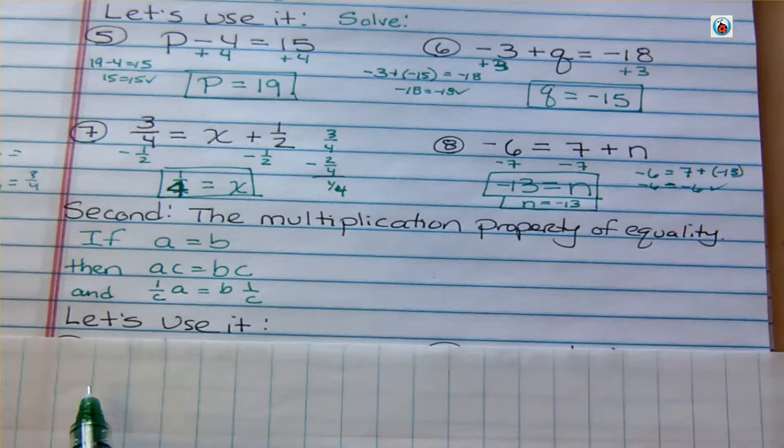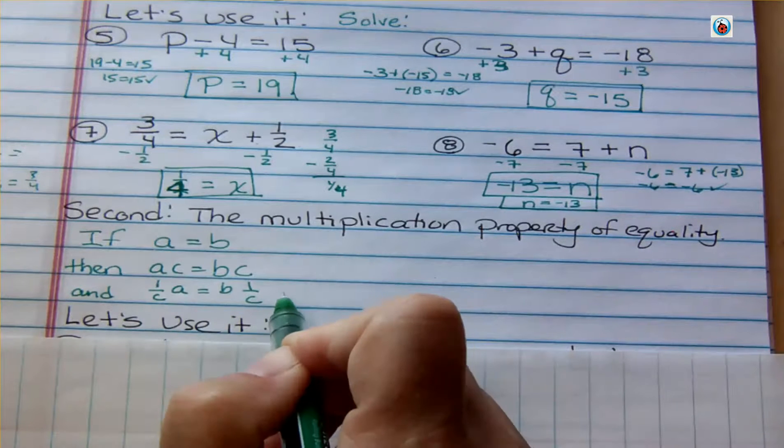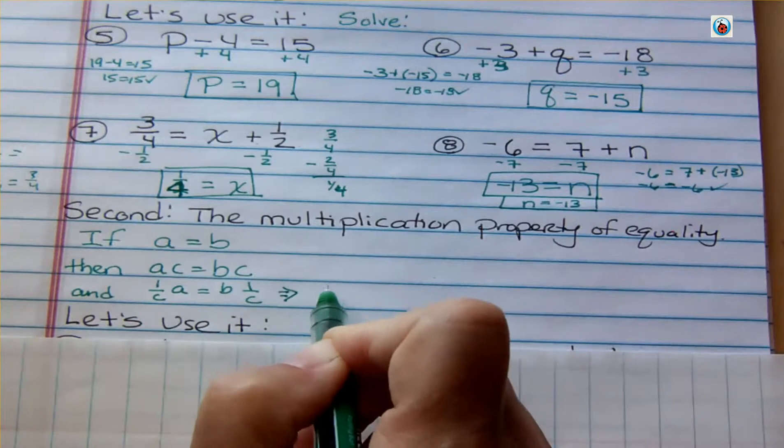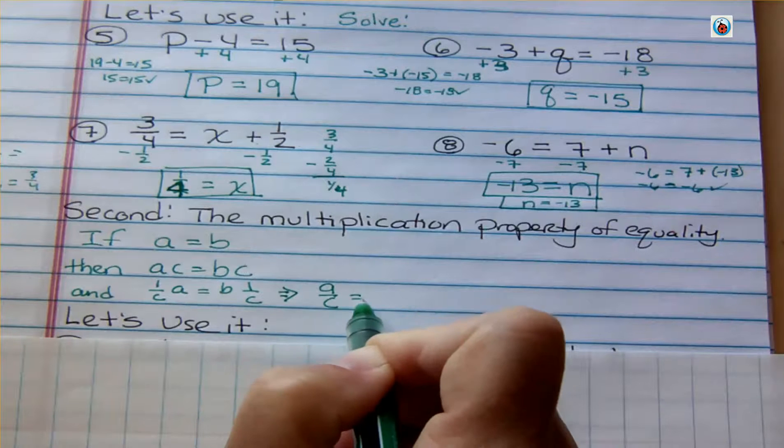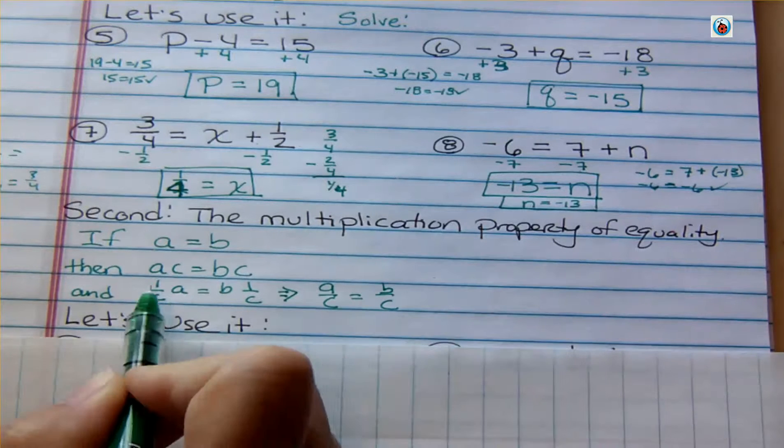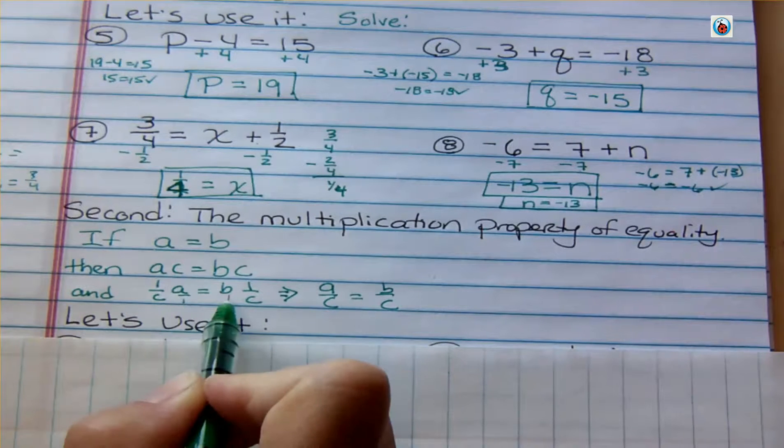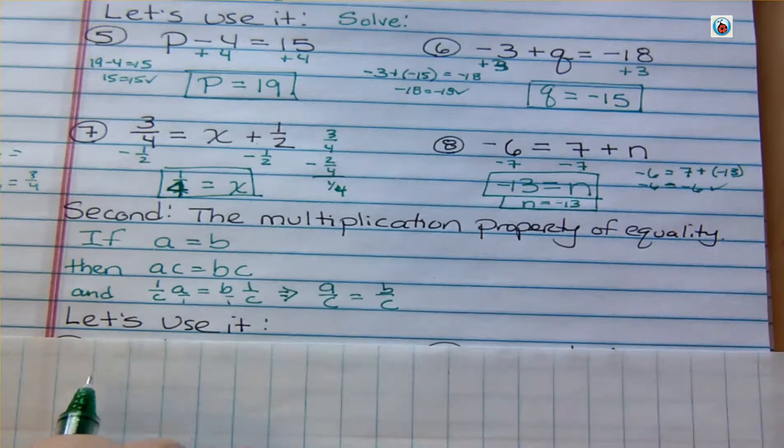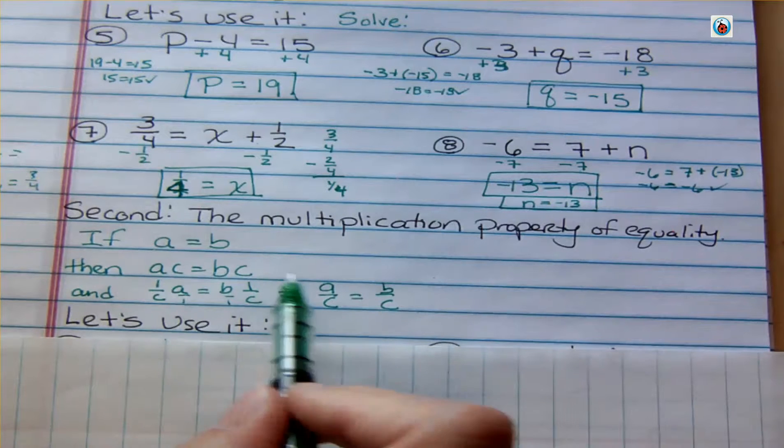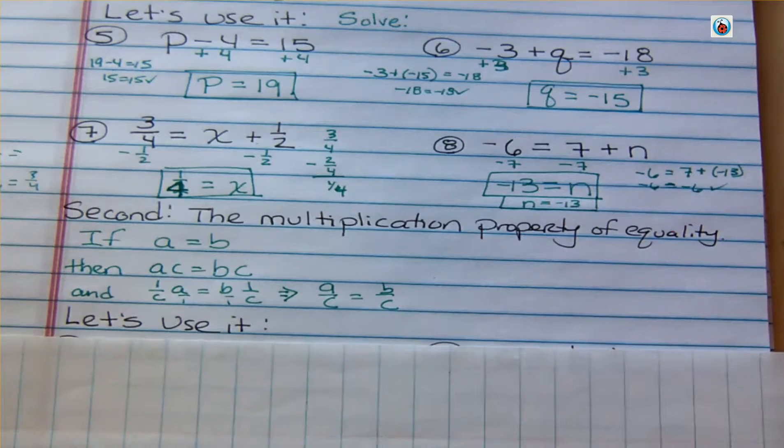So what that implies is that A over C is equal to B over C, because if we multiply straight across, remember there's like a little imaginary 1 under there. So we can multiply both sides by C, or we can divide both sides by C because of that property. So let's use it.